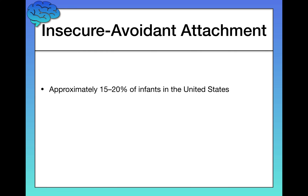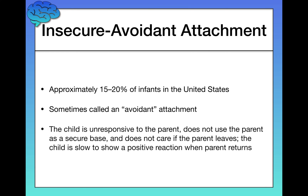The first insecure attachment is called insecure avoidant, or sometimes just avoidant. It's about 15 to 20% of infants in the United States. The child is generally unresponsive to the parent — the parent isn't a secure base. The parent might leave, the parent might come back, and the child seems indifferent either way. Even after being left alone with the stranger, the child is really slow to show a positive reaction to the parent. It's simply an avoidance of — an indifference toward — the parent.